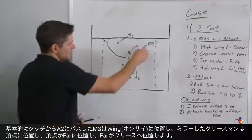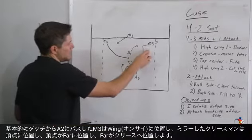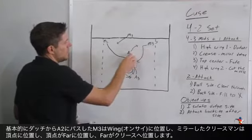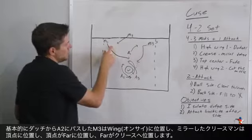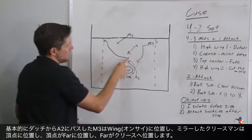Now after all this movement one of the benefits of this offense is the fact that we're put back into the exact same place that we were in. Basically as this dodger comes down and moves the ball he now becomes the wing player up here, whoever mirrored up is the top center player, the fade is the backside player and the cut the middle is now the crease player.